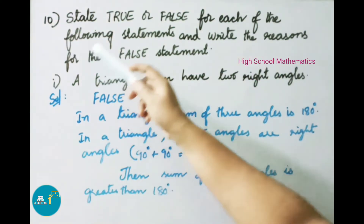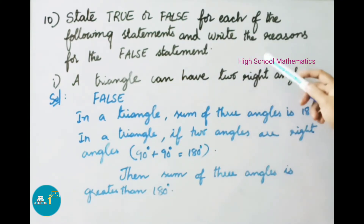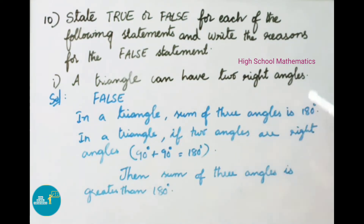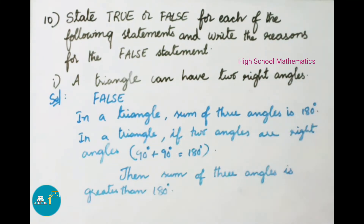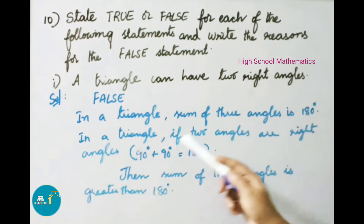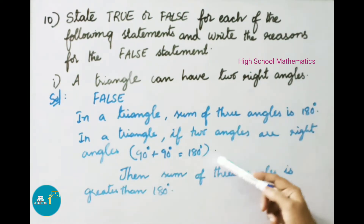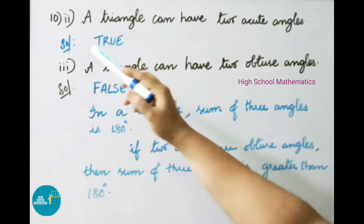Question number 10: State true or false and write reasons for false statements. First: a triangle can have 2 right angles — this statement is false, because if 2 angles are right angles, 90 plus 90 equals 180 degrees, and the sum of all 3 angles would be greater than 180 degrees.